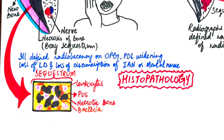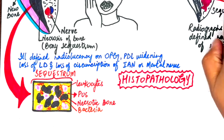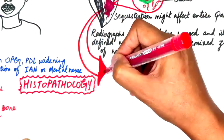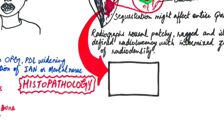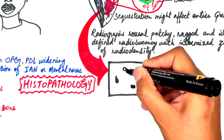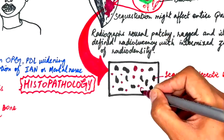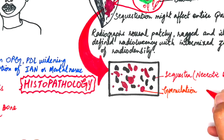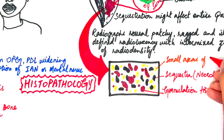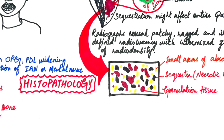Biopsy in chronic osteomyelitis typically reveals a significant soft tissue component consisting of chronically inflamed fibrous tissue filling the spaces between bone trabeculae. Scattered sequestra in areas of abscess formation are also commonly observed.